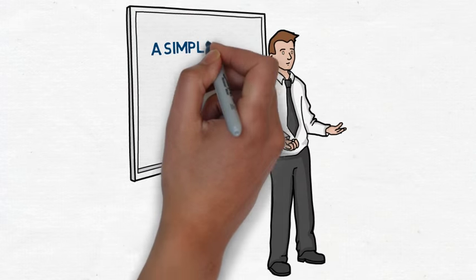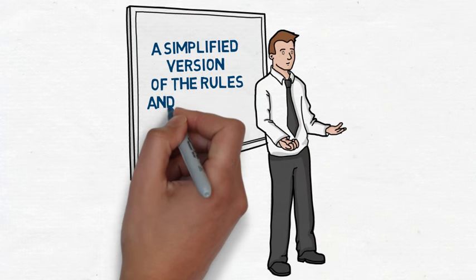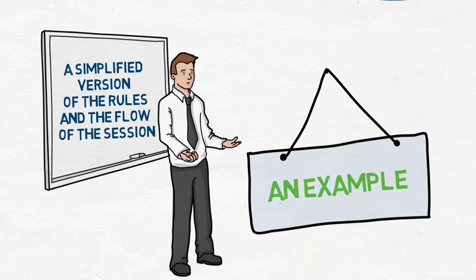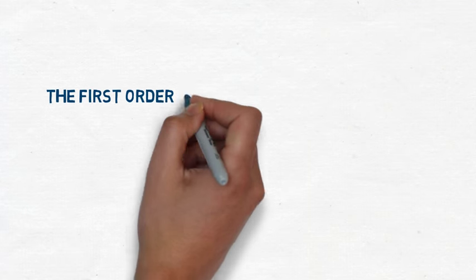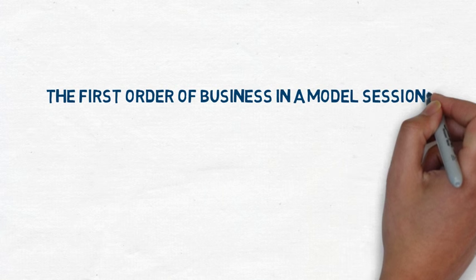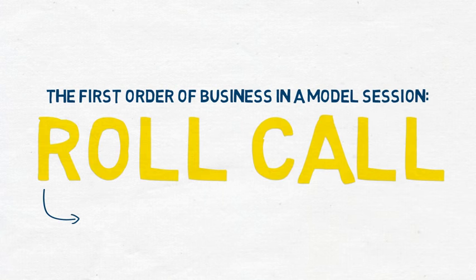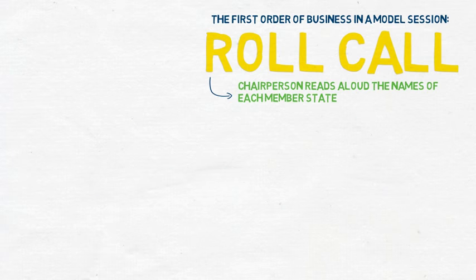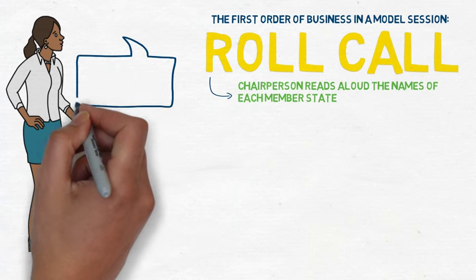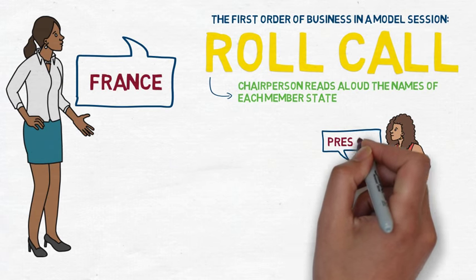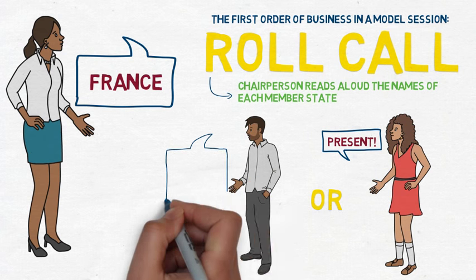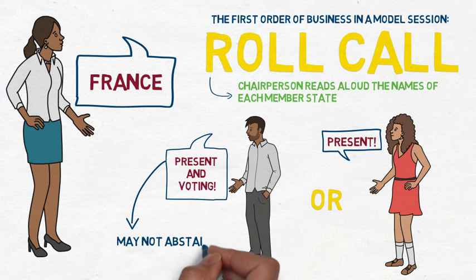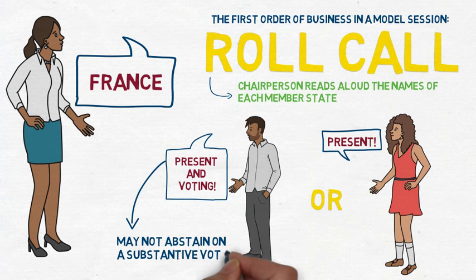Now, let's present a simplified version of the Rules and the flow of the session that could actually be used in simulated negotiations. The first order of business in a model session is a roll call, during which the chairperson reads aloud the names of each member state. When a delegate's country name is called, he or she may respond 'present' or 'present and voting.' A delegate responding 'present and voting' may not abstain on a substantive vote.